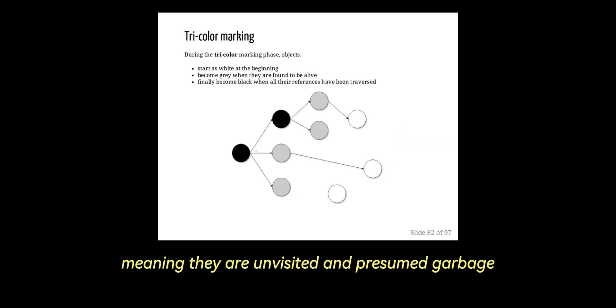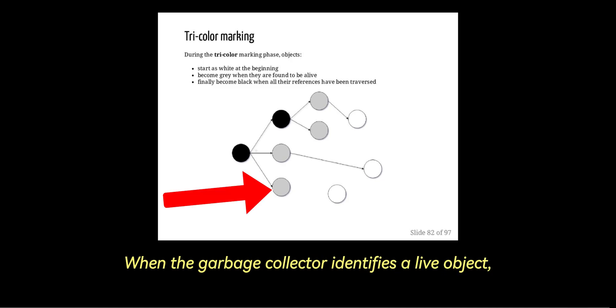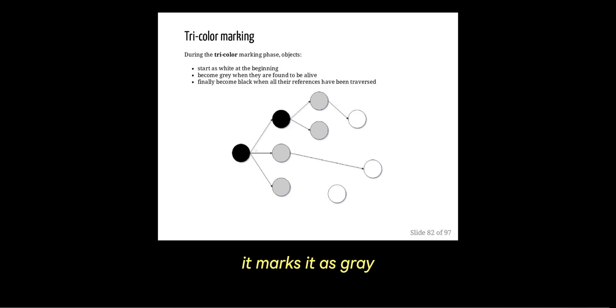Number two is gray. When the garbage collector identifies a live object, it marks it as gray and begins checking any objects it references. Gray objects are in progress and awaiting full exploration.